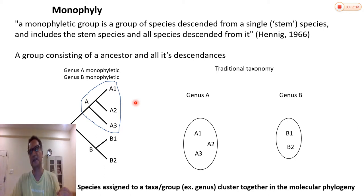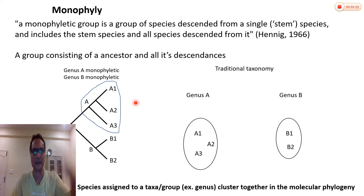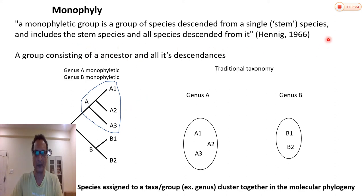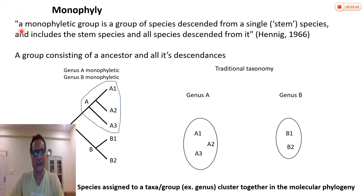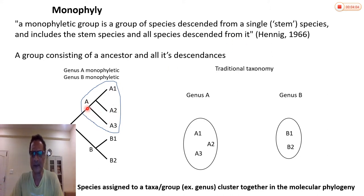In the cladistic definition — cladistics being one of the schools of systematics, the other being the phenetic school — a monophyletic group is a group of species descendant from a single stem, and includes the ancestral species and all species descended from it. If you have an ancestral species and all species that descend from it, they will obviously cluster together. Another way of looking at it: it's a group consisting of an ancestor and all its descendants.